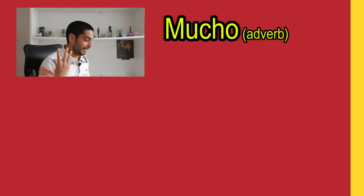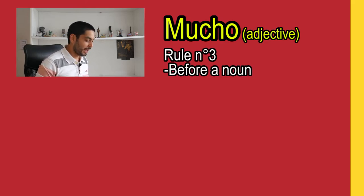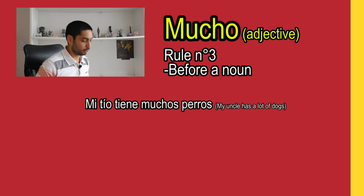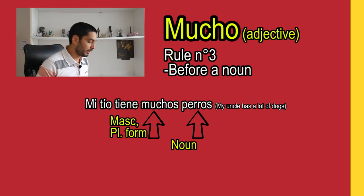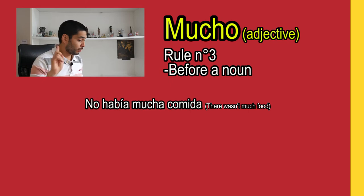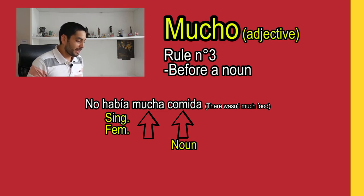As the third and last rule, let's see the adjective form of mucho, which goes always with a noun and has variation according to the gender and number of the noun — placed before the noun. For example: Mi tío tiene muchos perros — muchos fits with perros, both masculine and plural. Another example: No había mucha comida — since comida is feminine singular, it fits with mucha.